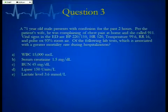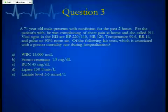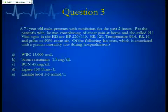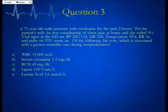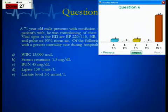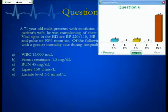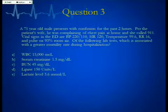Third case: 71-year-old male with confusion for two hours. His wife says he was complaining of chest pain at home and called 911. Vital signs: blood pressure 220/110, heart rate 120, temperature 99.6, respiratory rate 16, pulse ox 93% on room air. Of the following lab tests, which is associated with greater mortality during hospitalization? Most people think E — and we have a couple who went with A and C.